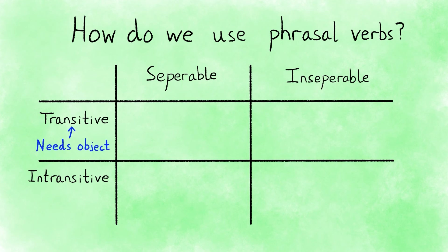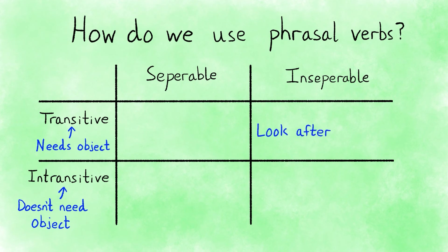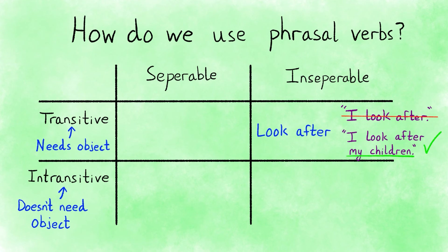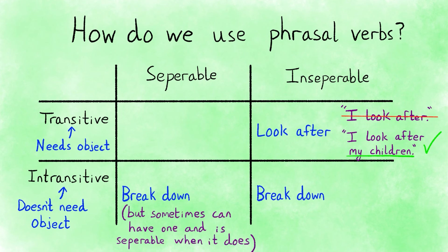Transitive means there has to be an object with the phrasal verb for the sentence to make sense. Intransitive means there doesn't have to be an object. For example, the phrasal verb look after is transitive — it needs an object. If I only say I look after, it doesn't make sense. But if I say I look after my children, that does make sense. Breakdown is an example of an intransitive phrasal verb. It doesn't need an object — we can just say my car broke down.